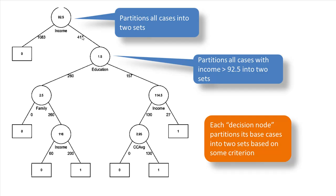We took the entire set of cases that we had, and this node partitions them into two groups. Again, this node takes all the people whose income was greater than 92,500 and further partitions them into two groups based on education. So at the end of this partition, we have three groups of people: one group with income less than or equal to 92,500, and two more groups based on education less than or equal to 1.5 and education greater than 1.5.